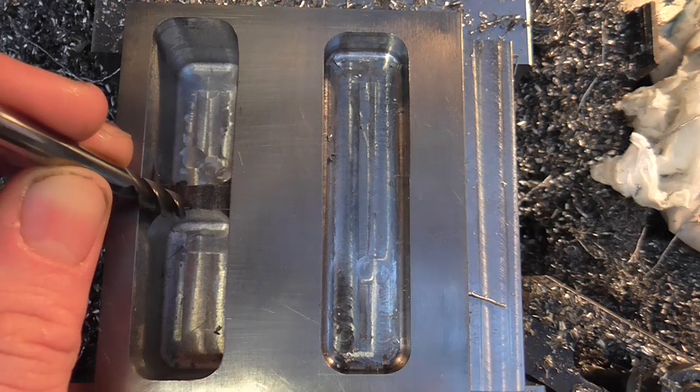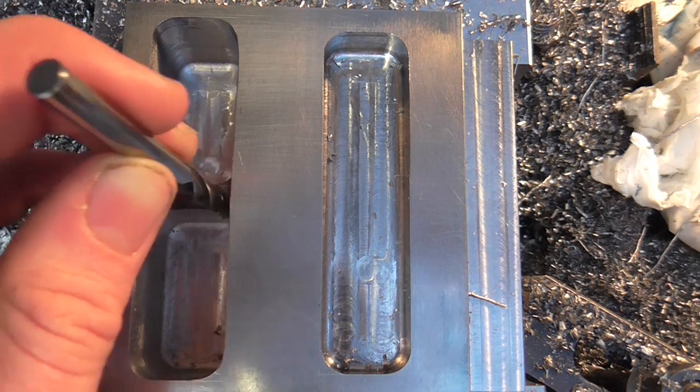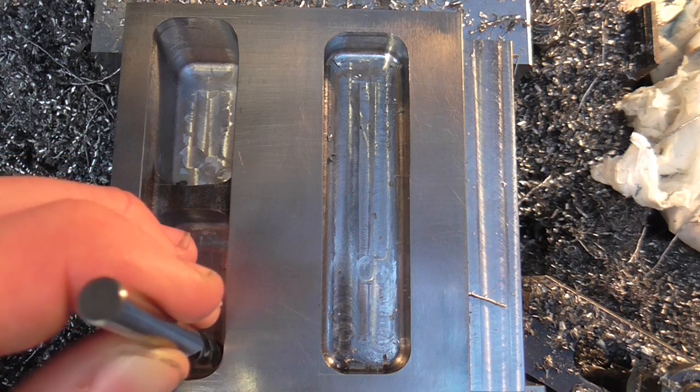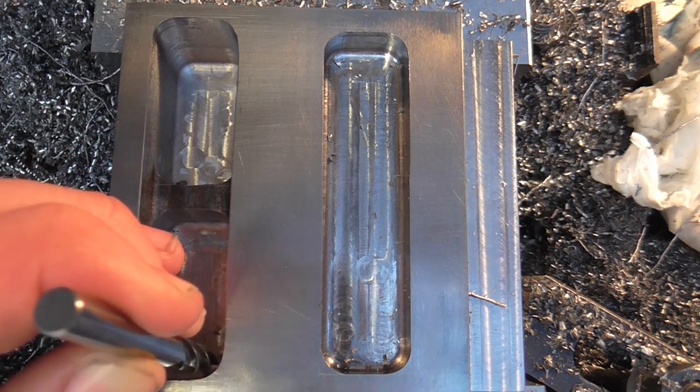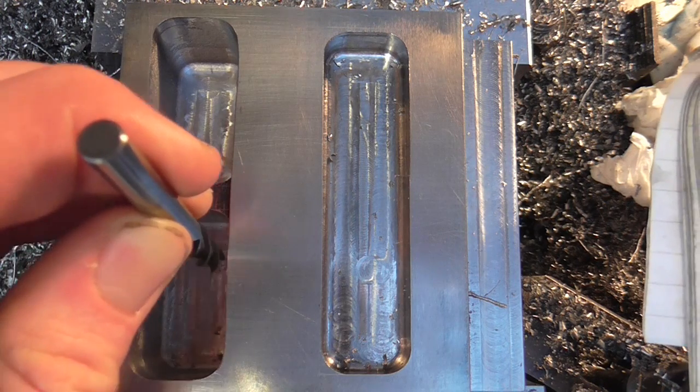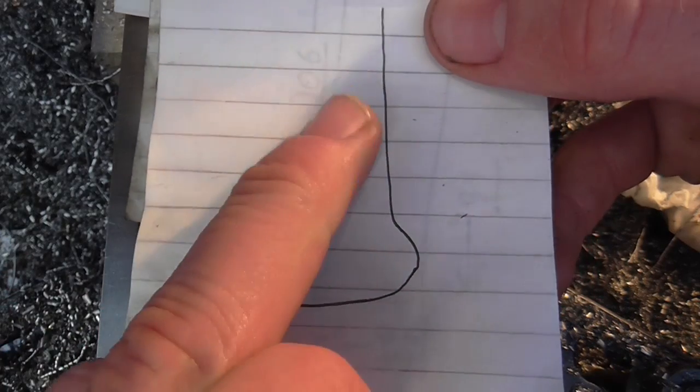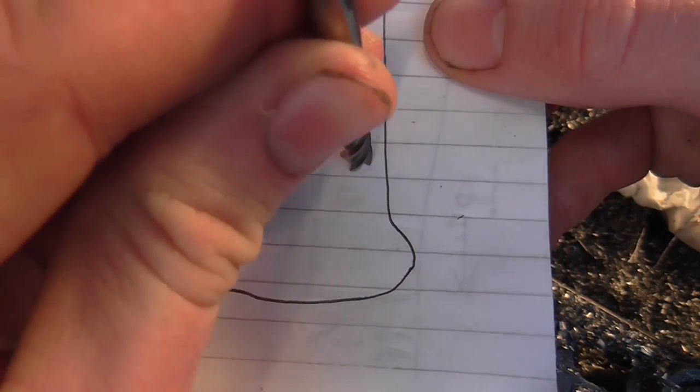Now anyone that's done much milling will know that if I go for this in one, when I come particularly into the corners where all this extra meat is, if I try and feed around like this, I'm going to end up with a horrid dwell mark.